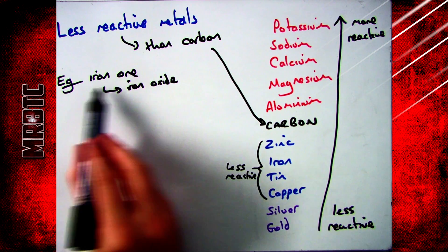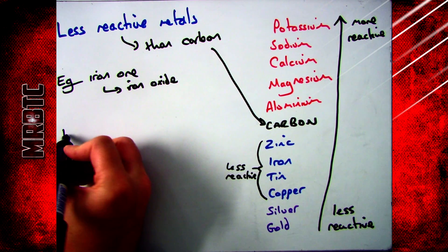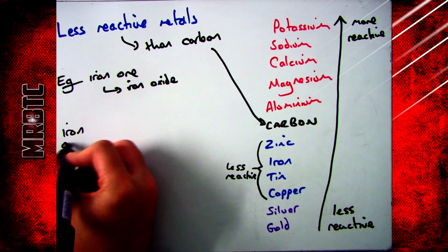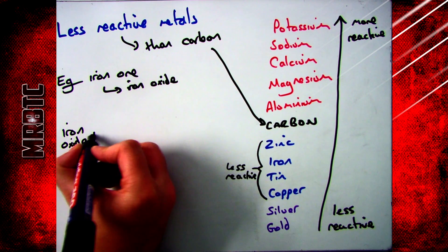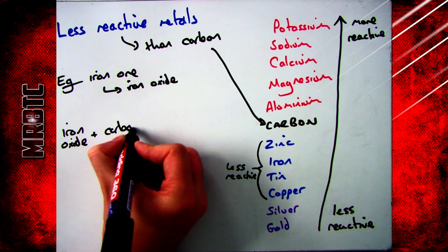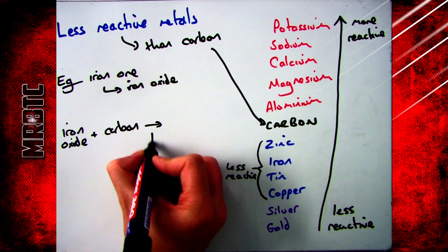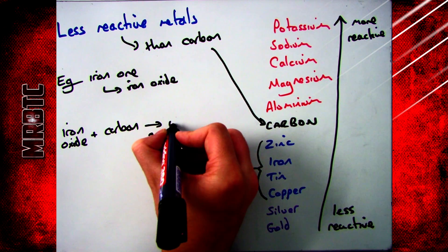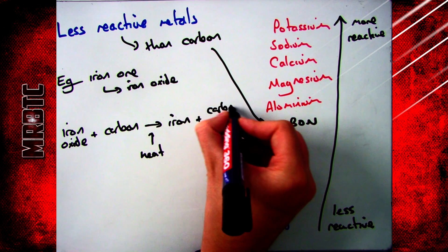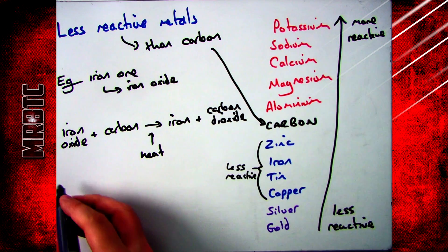For example, if you had iron ore, which is iron oxide and you wanted to extract it, the first thing you'd say is it's less reactive than carbon, therefore you heat it with carbon. If you were trying to write the word equation for this, it would be iron oxide plus carbon, which is then heated, which will give you iron and carbon dioxide.